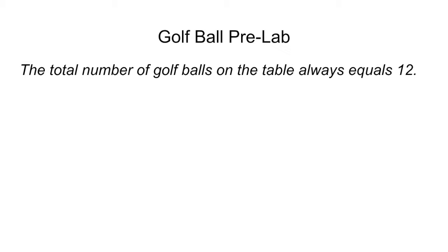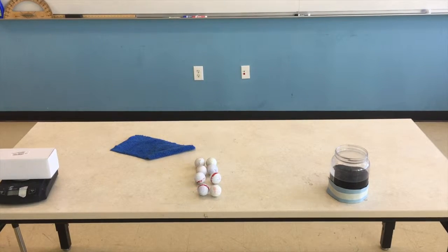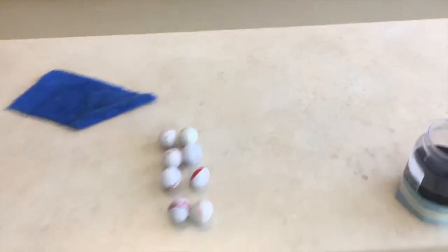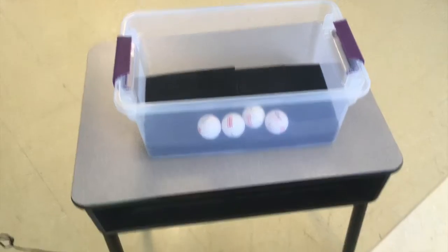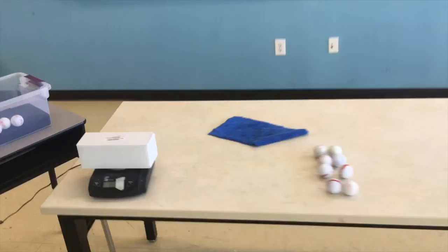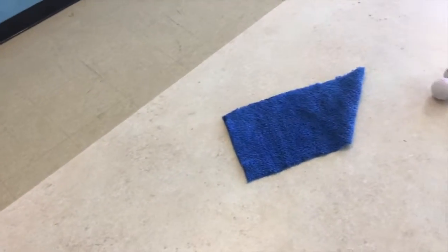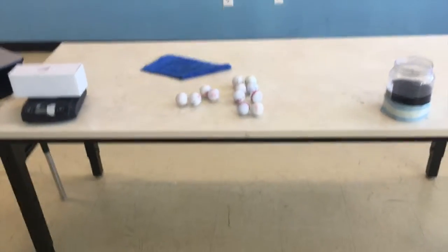Let's go ahead and switch some things up and see if we can count them again. So how many golf balls on the table now? If you said 8, you would be correct. We notice there's not any more on the table that we can see, but there are 4 over in this box off the table. So we've removed 4 from the table, and we'd have to put those back on to fit our pattern of 12 golf balls always being on the table.